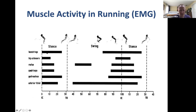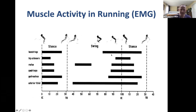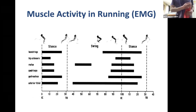Our nervous systems take advantage of this in walking and running. These graphs show the timing of when the nervous system activates major muscle groups in normal human running — hamstrings, glutes, quadriceps, plantar flexors. They all tend to get activated right before the leg hits the ground and the joints flex, stretching those big muscle groups eccentrically.